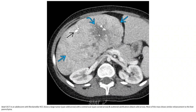Contrast enhancement in a case of fibrolamellar HCC shows a central scar and scattered calcification. Most of the mass has similar enhancement to the liver on MRI.